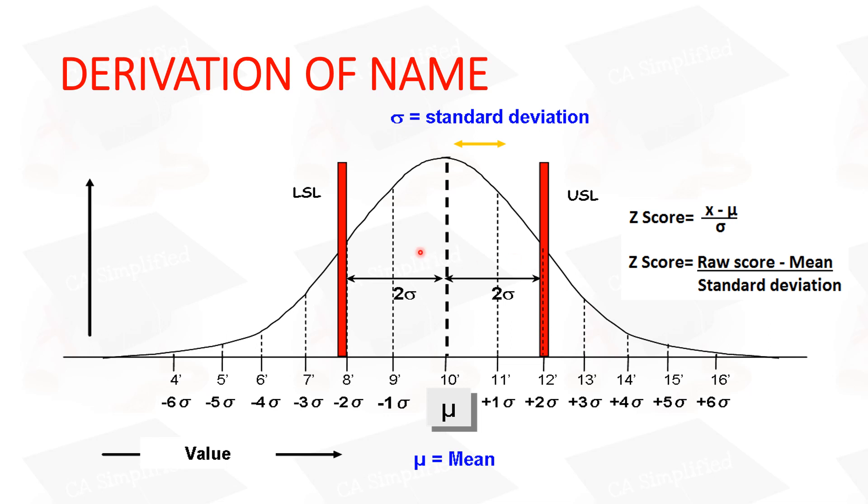So if your product is defect free, then it will fall in this area. In this case, you will see that it is minus 2 sigma to plus 2 sigma. That means if any organization operates in two sigma, then it will be defect free and fall in this area.